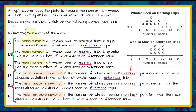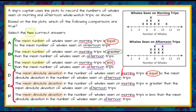So we have morning and afternoon. We're going to consider the first three first because they all compare the mean of the morning to the afternoon, and we can see equal to, less than, and greater than. So we want to know if the mean number in the morning is equal to, greater than, or less than the mean number in the afternoon. We'll do the same thing when we look at mean absolute deviation — is morning equal to, greater than, or less than the afternoon?